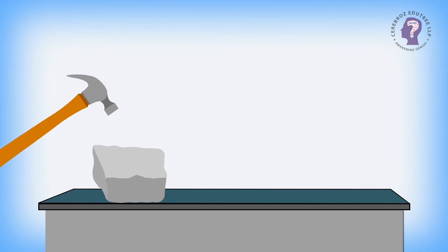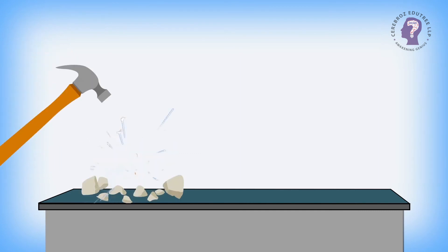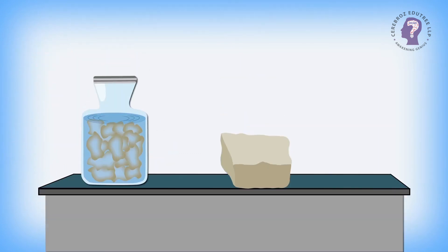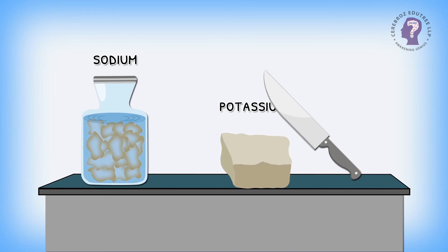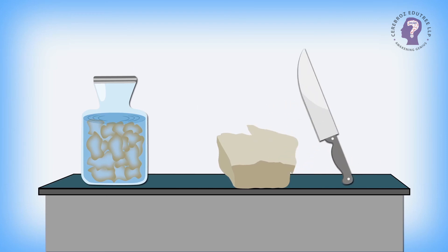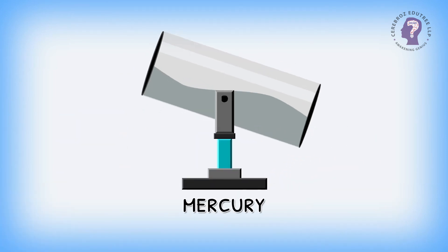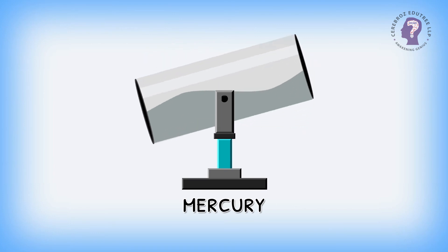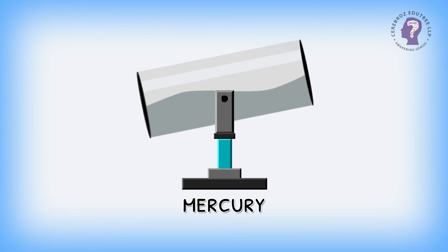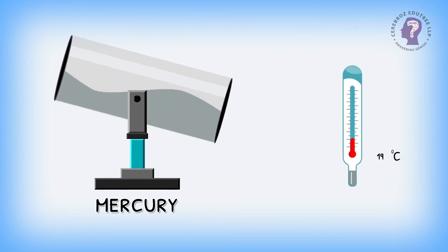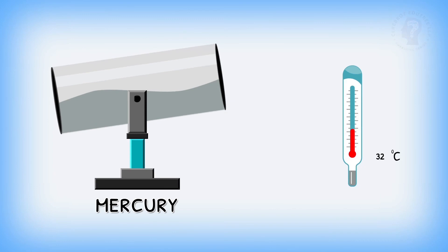However, not all metals have these properties and there are a few exceptions. Metals like sodium and potassium are not malleable or ductile. In fact, they are so soft that they can be cut with a knife. Mercury is a metal that is the only metal which is in liquid state even at room temperature.